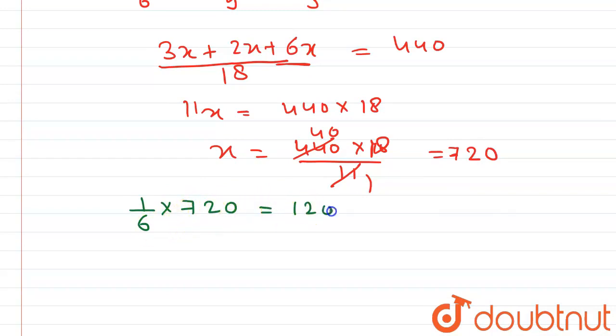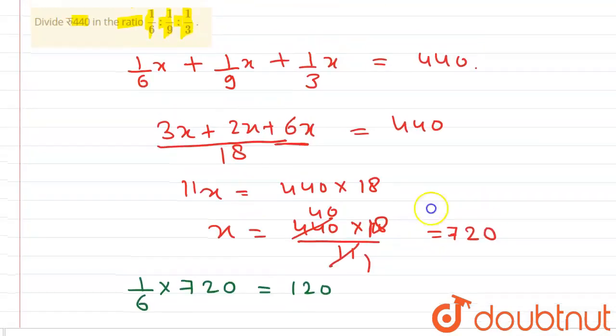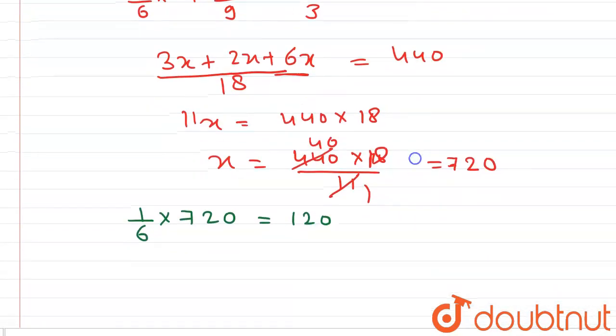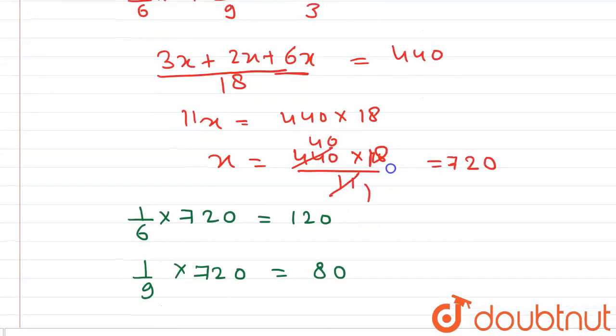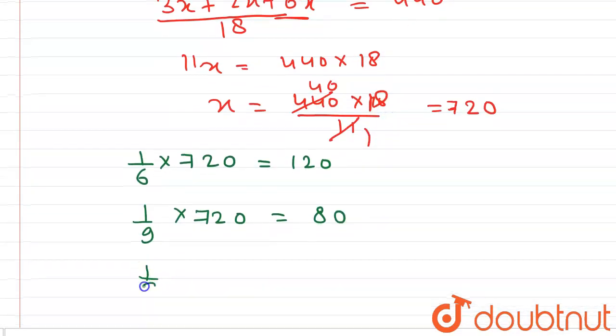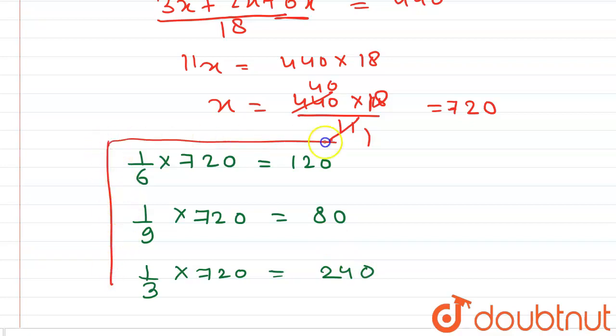And 1/9 of 720 is equals to 80. Here 1/3 into 720 is equals to 240. So here this is the required answer.